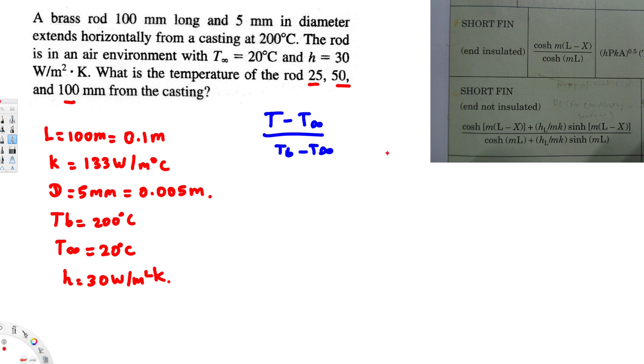What else do we need to solve this problem? We have to find this m value. To find m value, we choose this equation: m equals square root of hp over k times Ac. Whenever we have a cylindrical shape, this is a rod, so this is going to be cylindrical. We take the perimeter as a circle and the cross-sectional area as a circle.